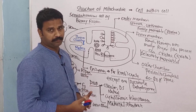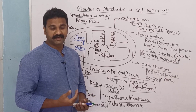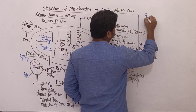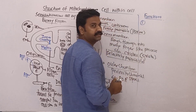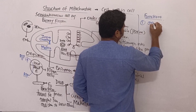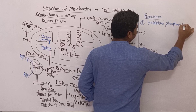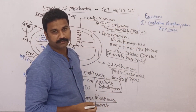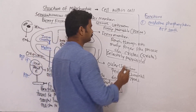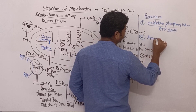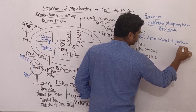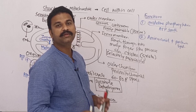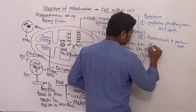Now for the functions of mitochondria beyond ATP production: number one, mitochondria is the site for oxidative phosphorylation, that is ATP synthesis. Mitochondria is also responsible for amino acid synthesis and protein synthesis — many amino acids can be intermediate products of the Krebs cycle, and these amino acids are utilized for protein production. Mitochondria also helps the cell in lipid synthesis.